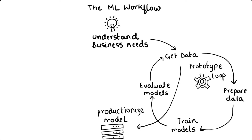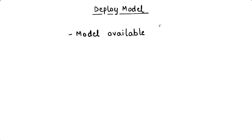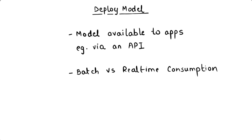Once the model evaluation and training processes are complete, the best candidate models are saved. Depending on the objectives of the product manager and team, the goal might be to perform a proof of concept, run an experiment, or deploy to production. Deploying to production means that one or more applications will consume the predictions made by the machine learning model. Data scientists typically work with machine learning engineers on deployment, and depending on how predictions are consumed, they can deploy for batch or real-time consumption.